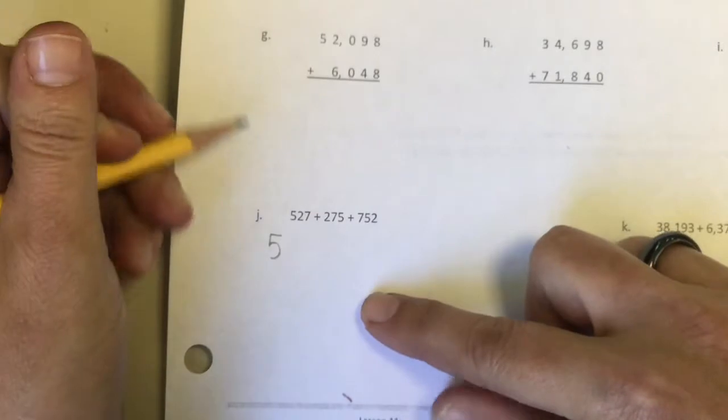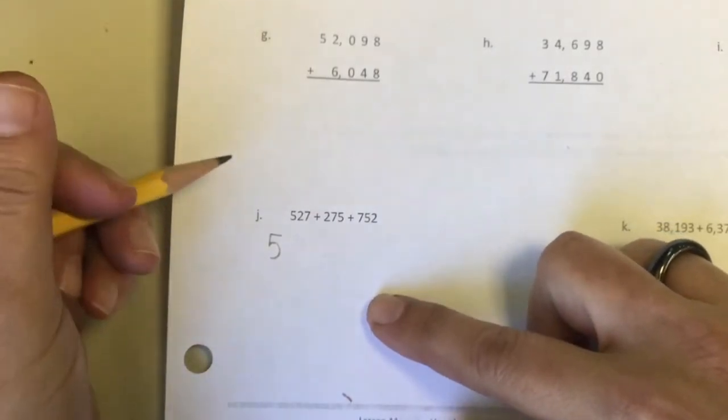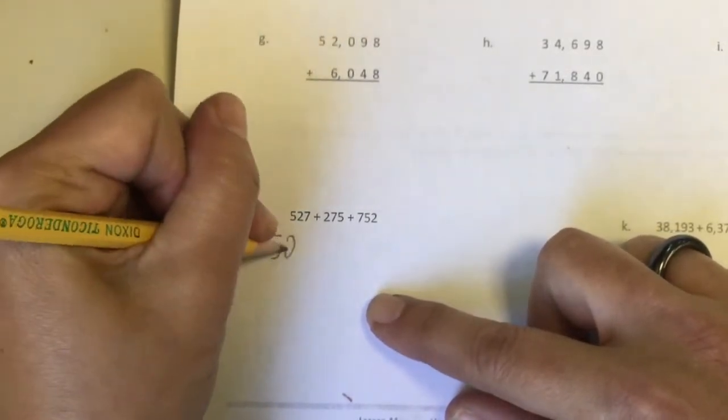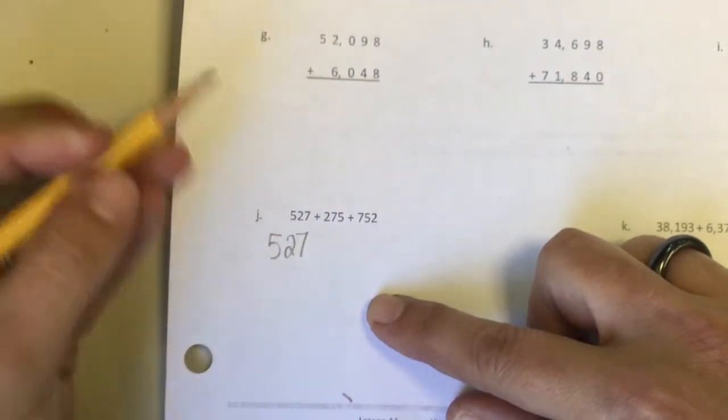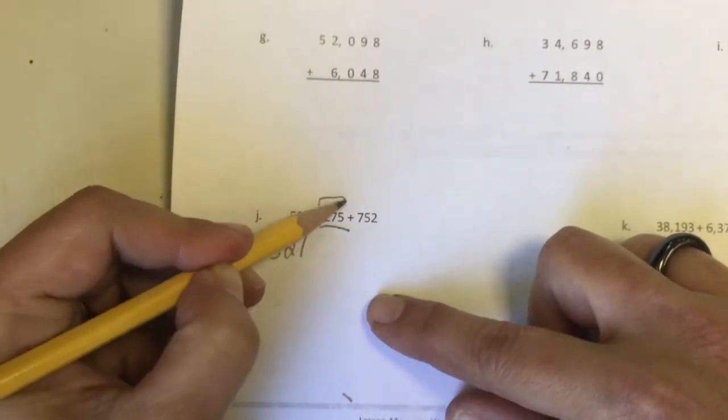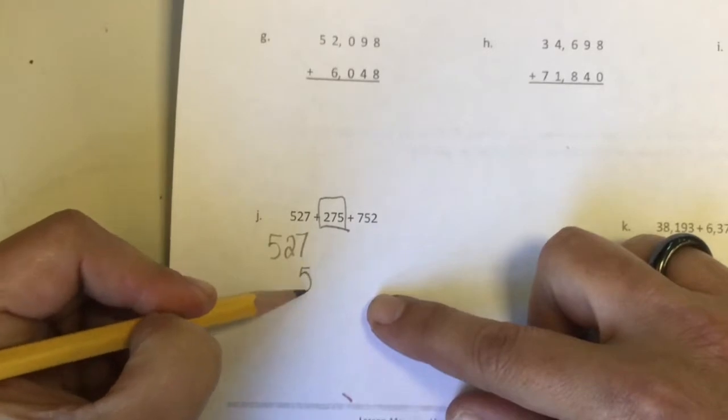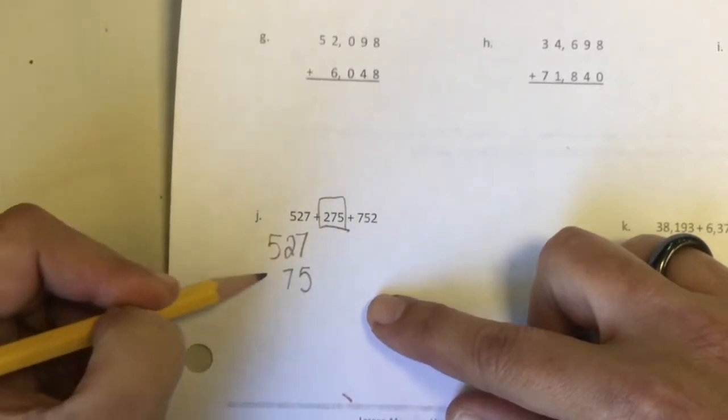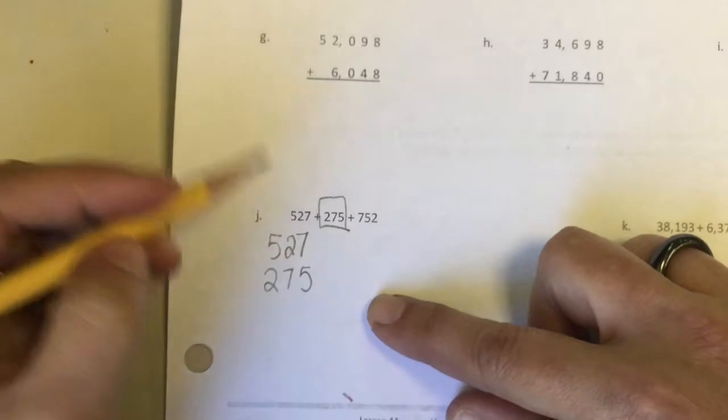So I'm going to write 527, and then when I write the second number I'm going to start in the ones place and make sure I get all of my numbers stacked correctly.